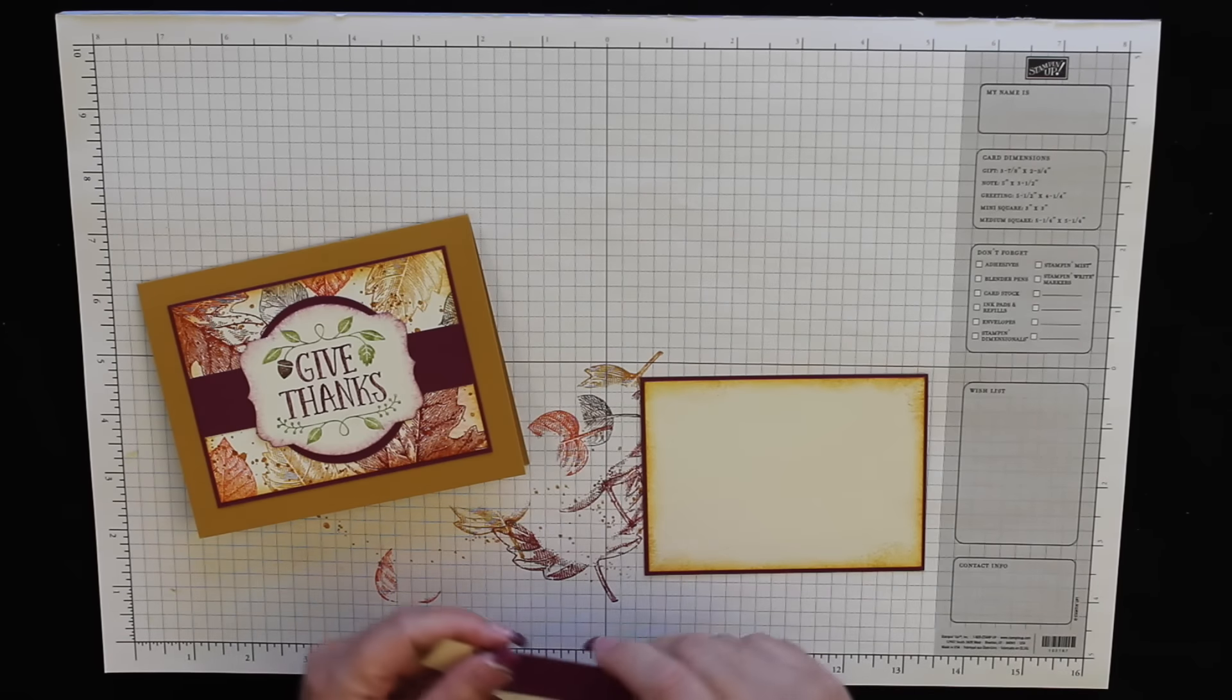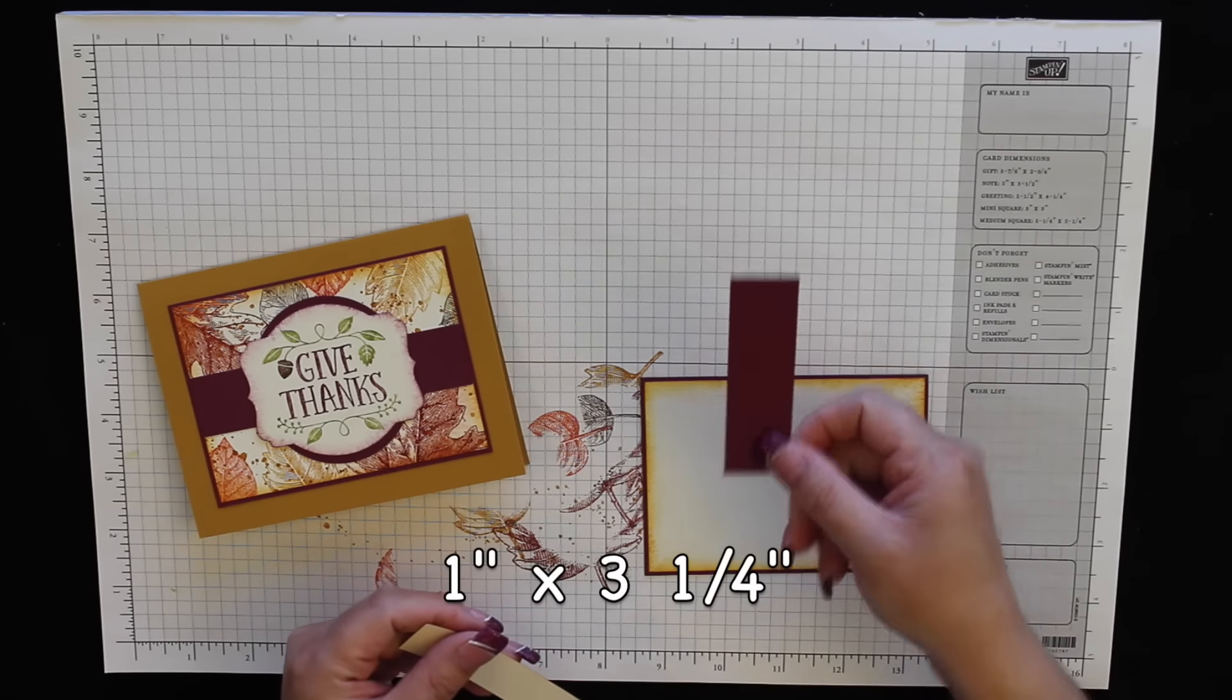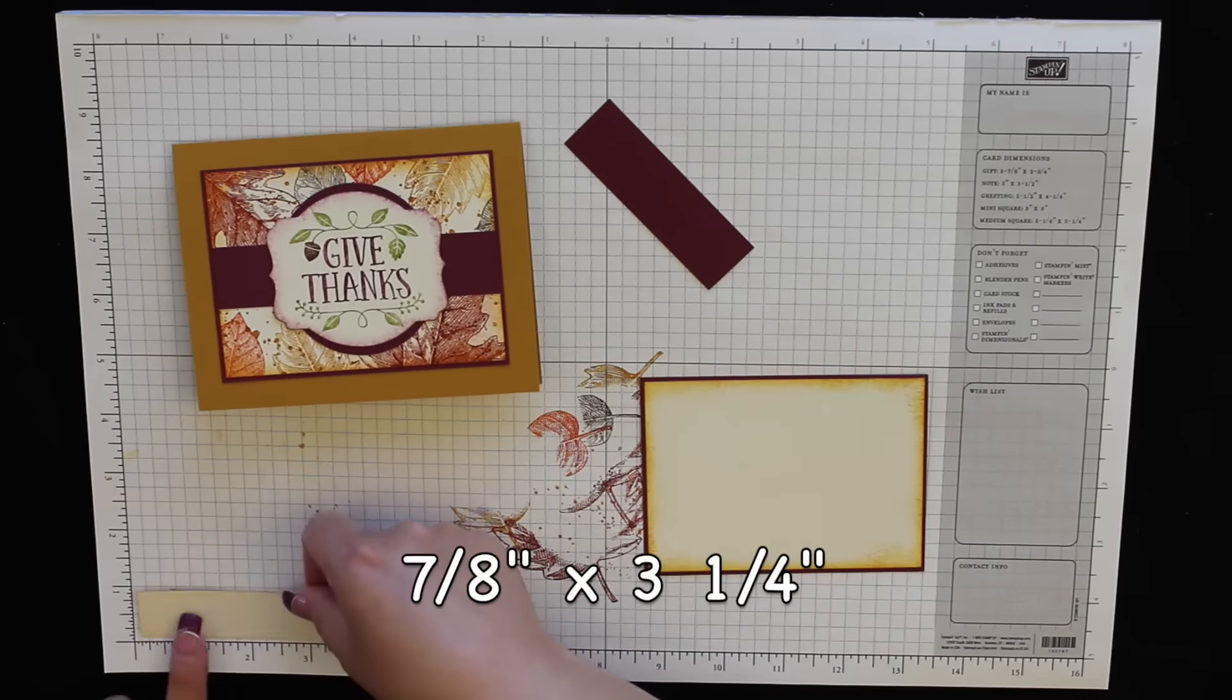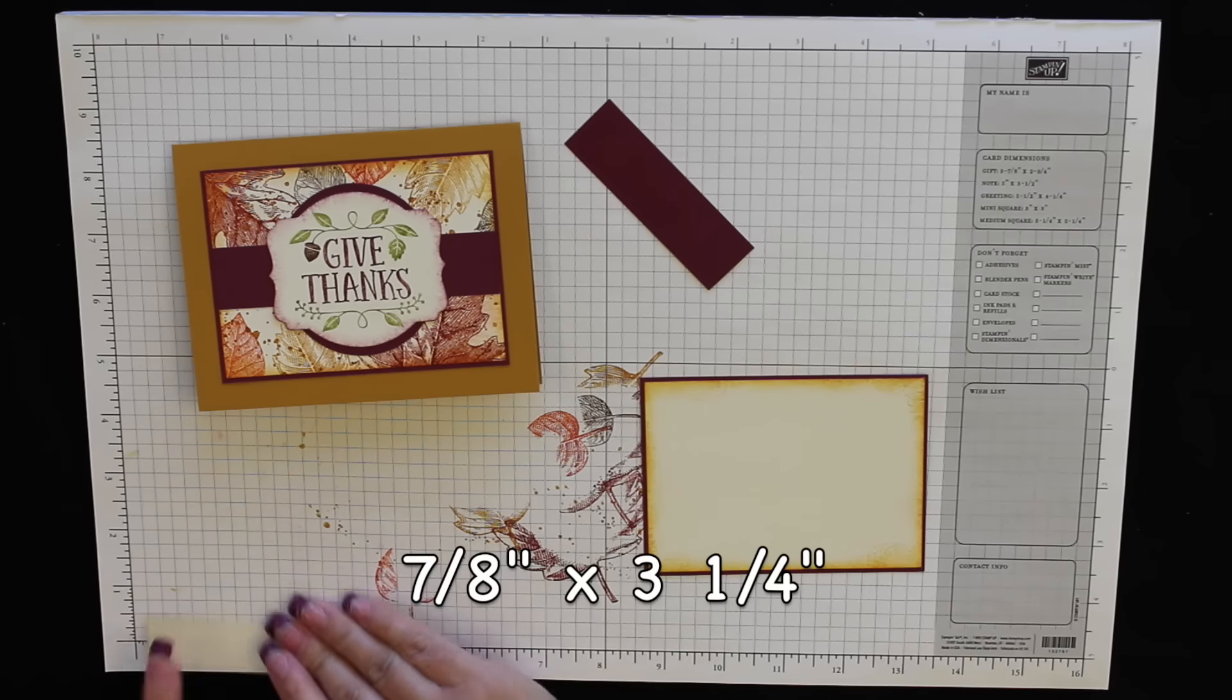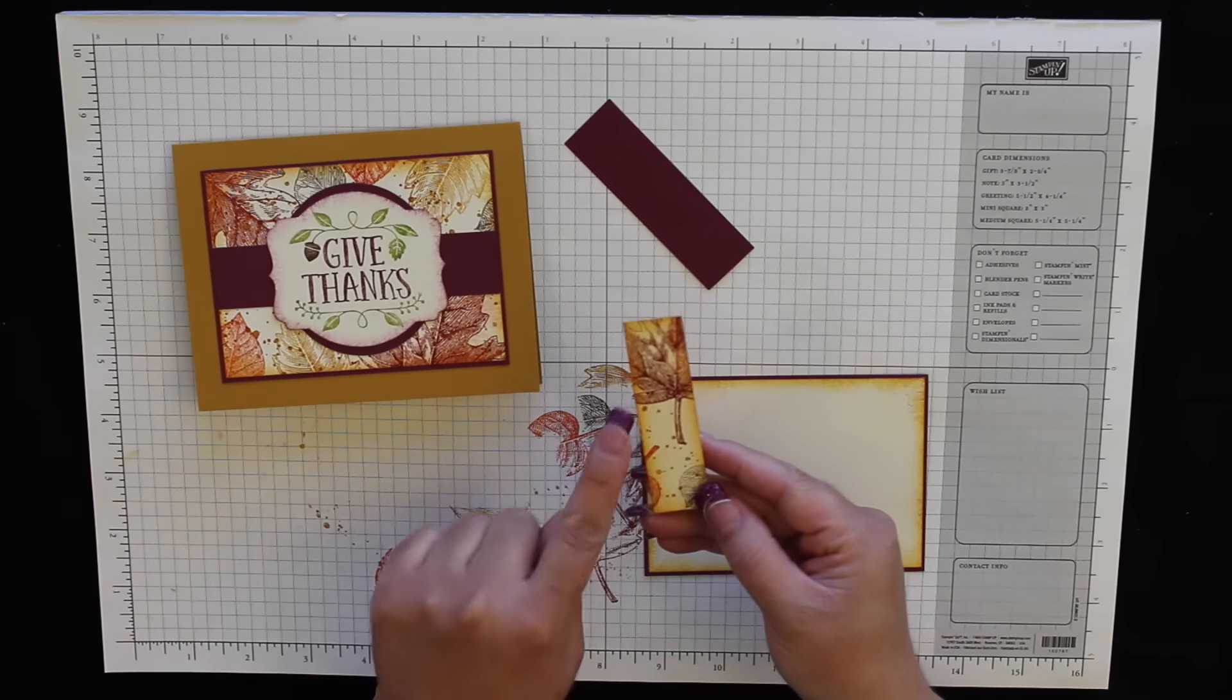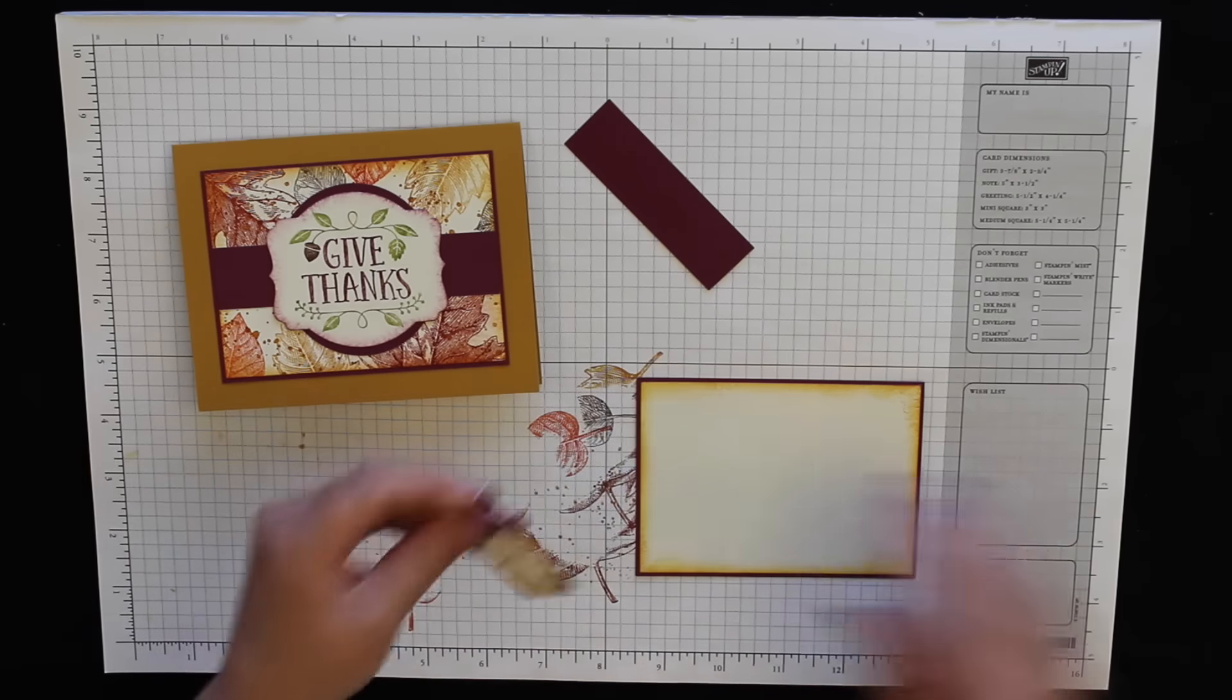And last, I have two more pieces. This is a Rich Razzleberry piece measuring one inch by three and a quarter, and this little teeny piece of Very Vanilla measures seven-eighths by three and a quarter. I did the same thing—I stamped some of these images on here, added my speckles, and sponged around the edge.